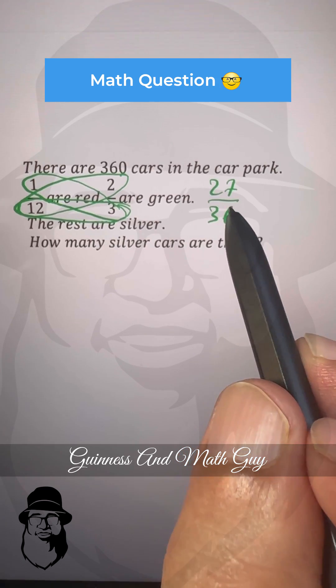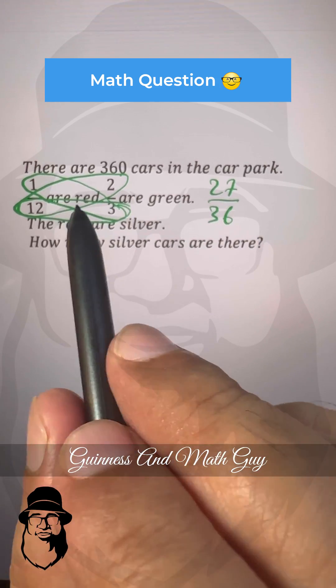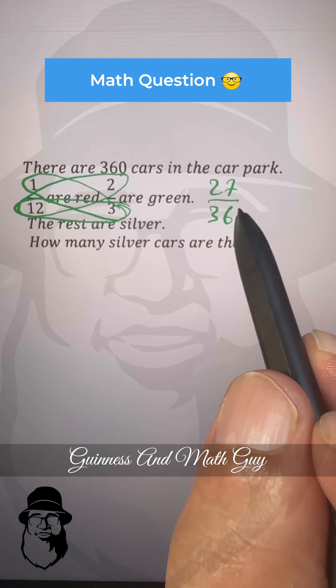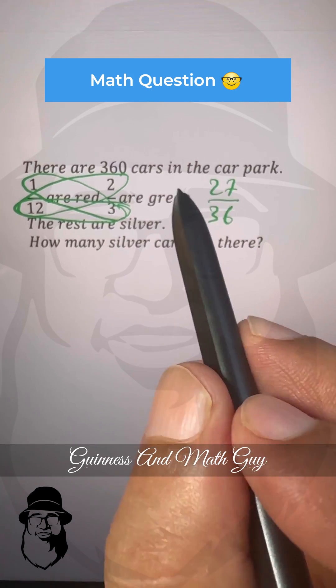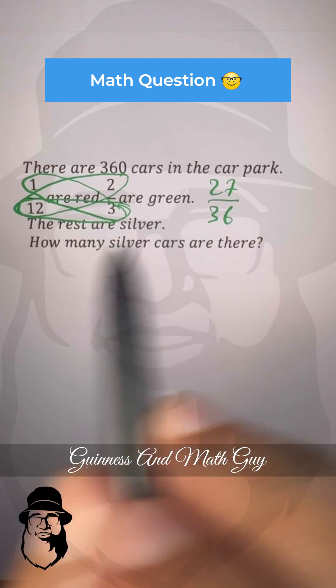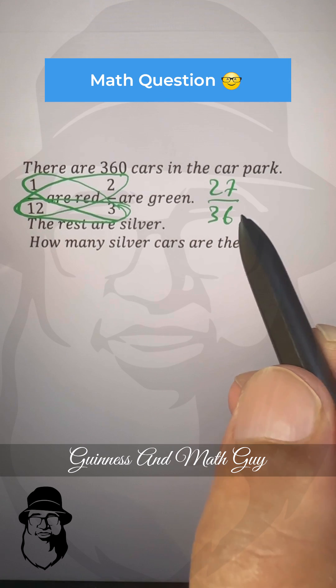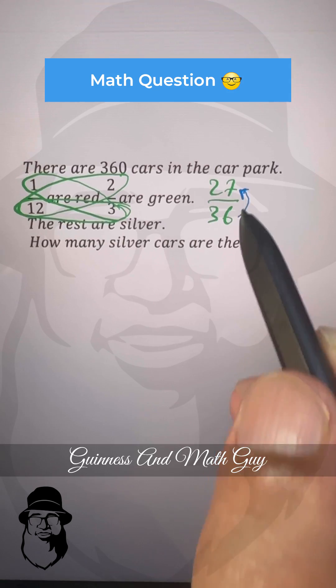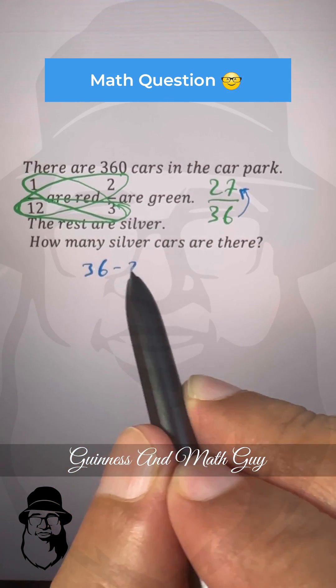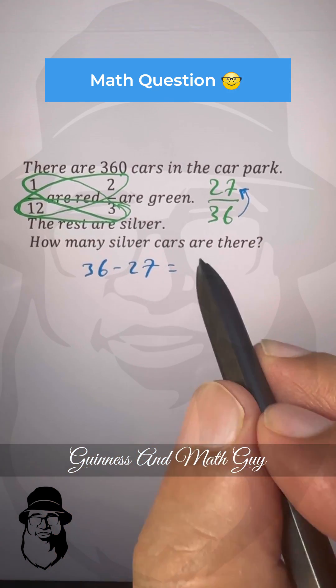So 27 over 36 are gone. The remaining is just subtracted from 1. Whenever we subtract any fraction from 1, we just subtract the numerator from the denominator. So 27 will be subtracted from 36. 36 minus 27 is 9.